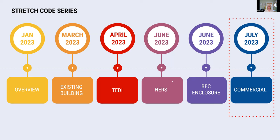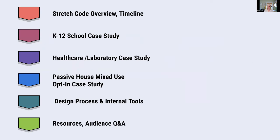Here's an overview of what we're going to do today. We'll give you a little bit of background, and maybe an update on which towns have opted into the opt-in specialized code. Chris Schaffner will deliver a K-12 case study on a school project. Jacob Knowles will present a case study on healthcare and lab use buildings. Jacob Bloom will talk about Passive House for a mixed-use project in Brookline, and Kristen Fritsch will review design process and internal tools from her work at Elkis Manfredi.